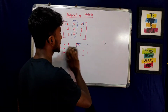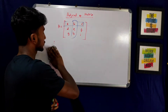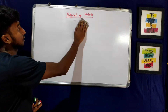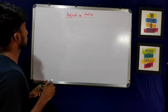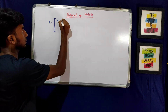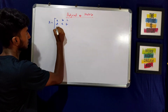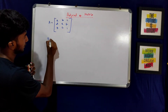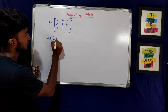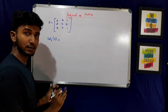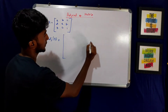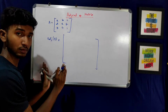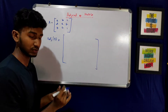What we need to do: the adjoint of matrix A. Each element is replaced by its cofactor, then we take the transpose. The adjoint is the transpose of the cofactor matrix. The order of the adjoint matrix is the same as the original matrix — if A is 3 cross 3, the adjoint is also 3 cross 3.